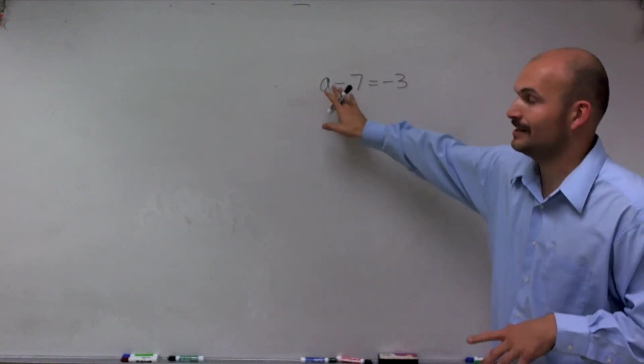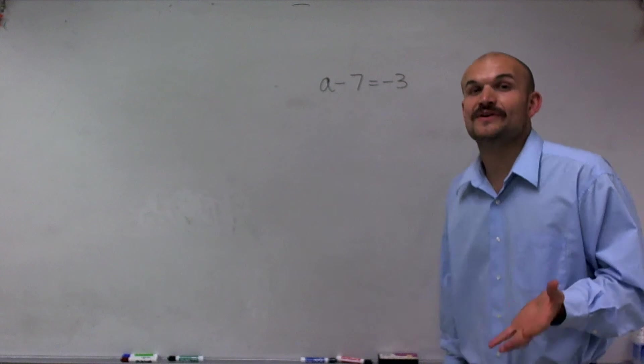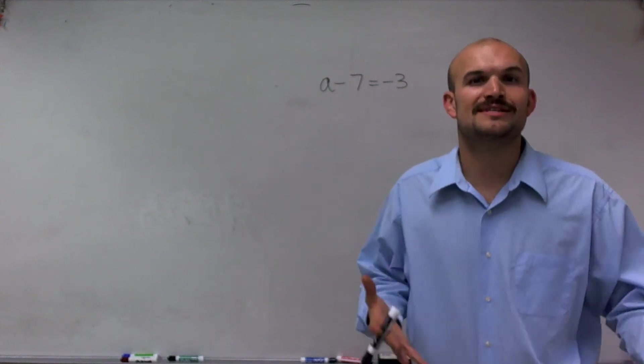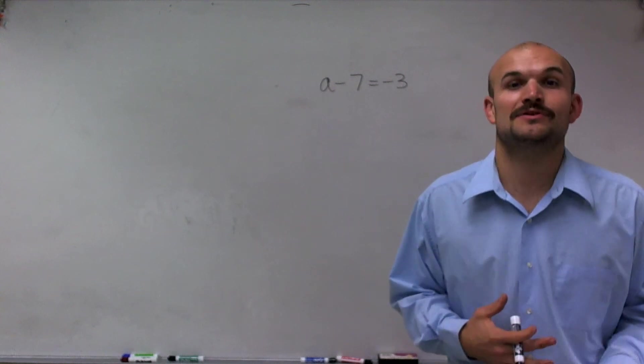So we have our variable a. And what this equation states is a minus 7 equals negative 3. It's very common for students to try to do these in your head. What number minus 7 is going to equal negative 3? A lot of times you can do that in your head.